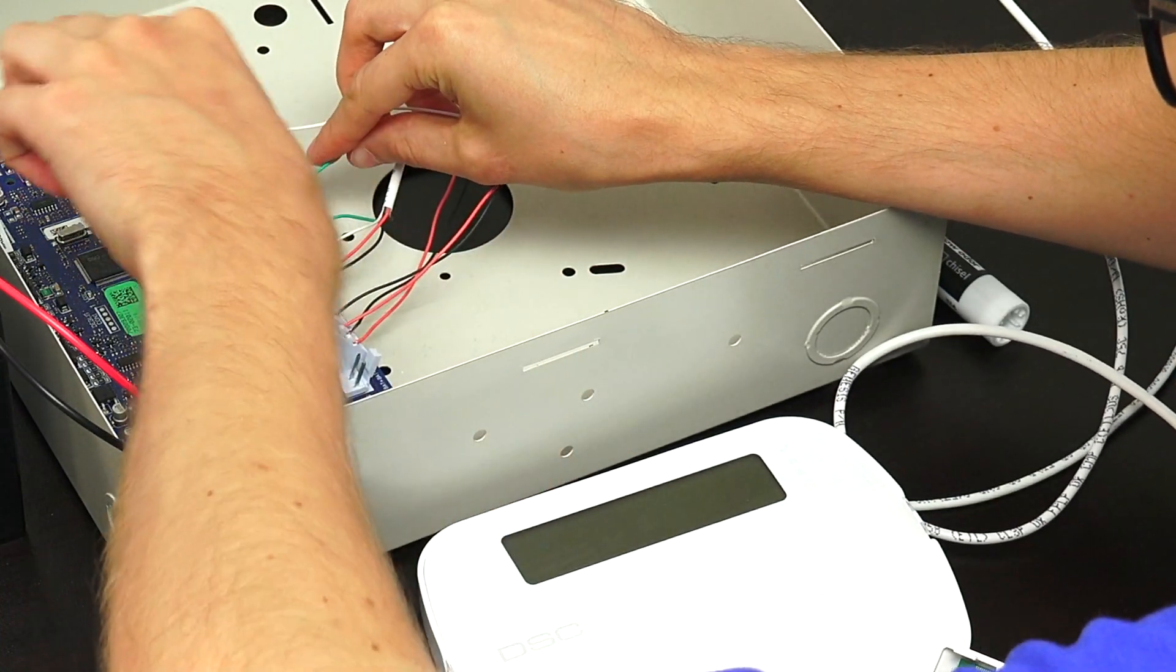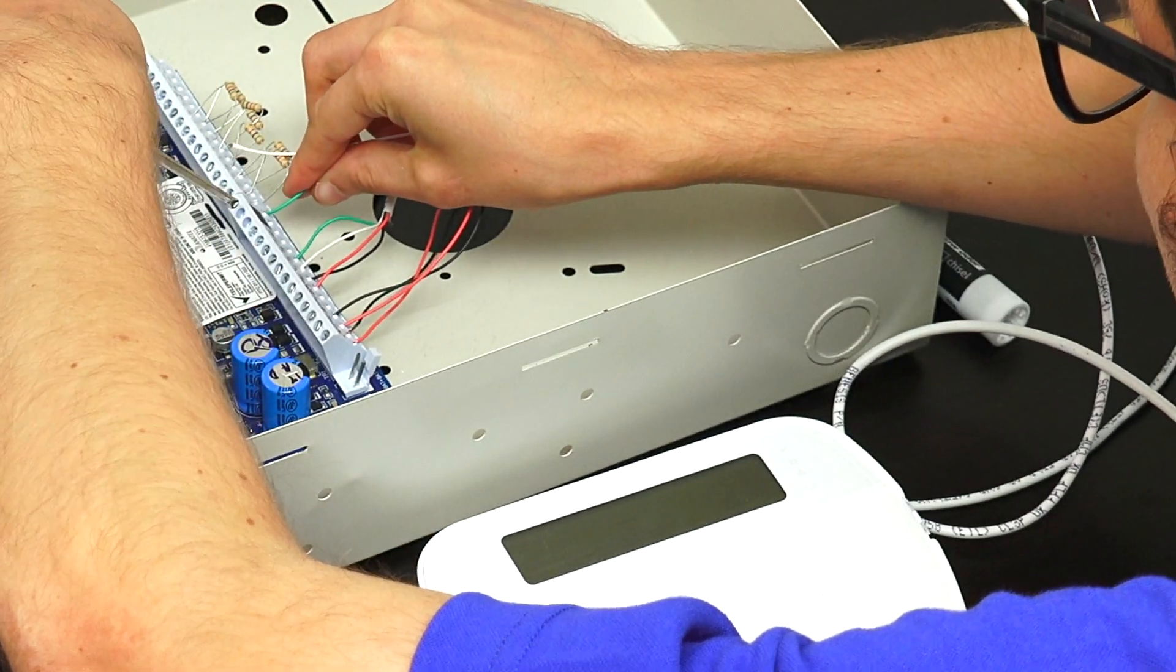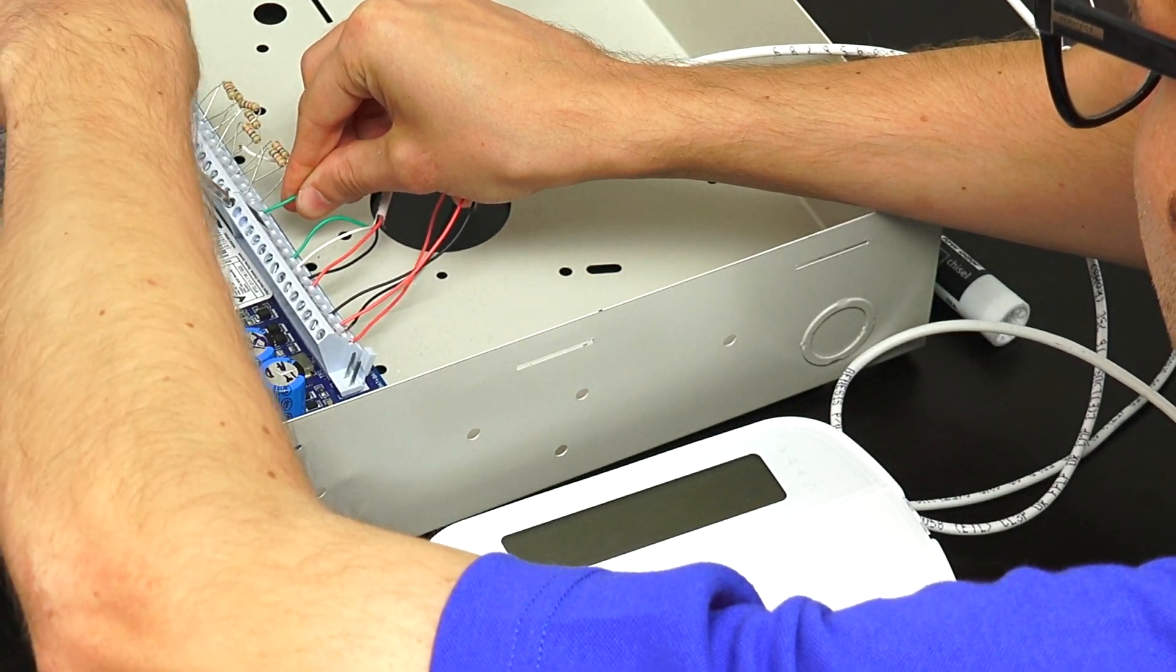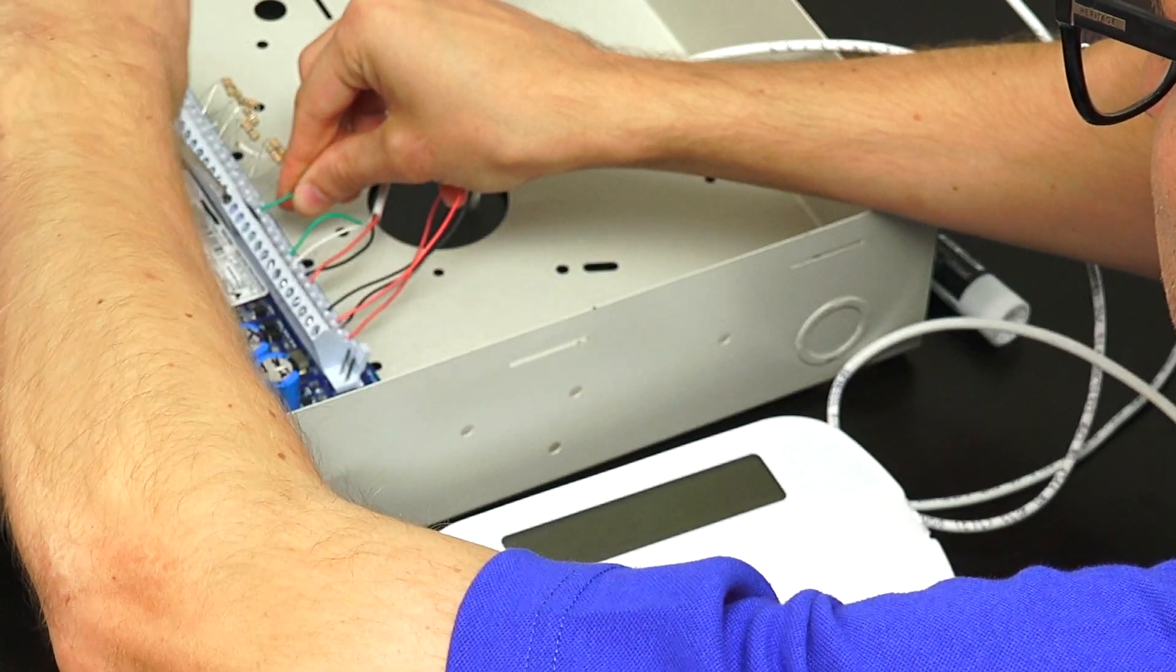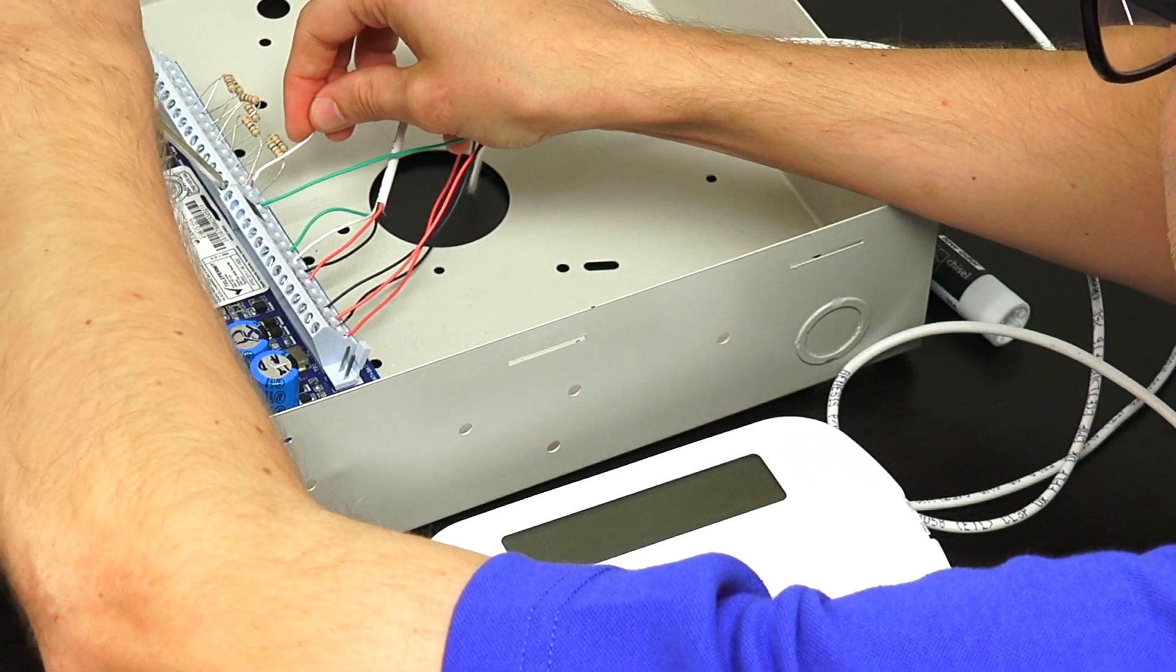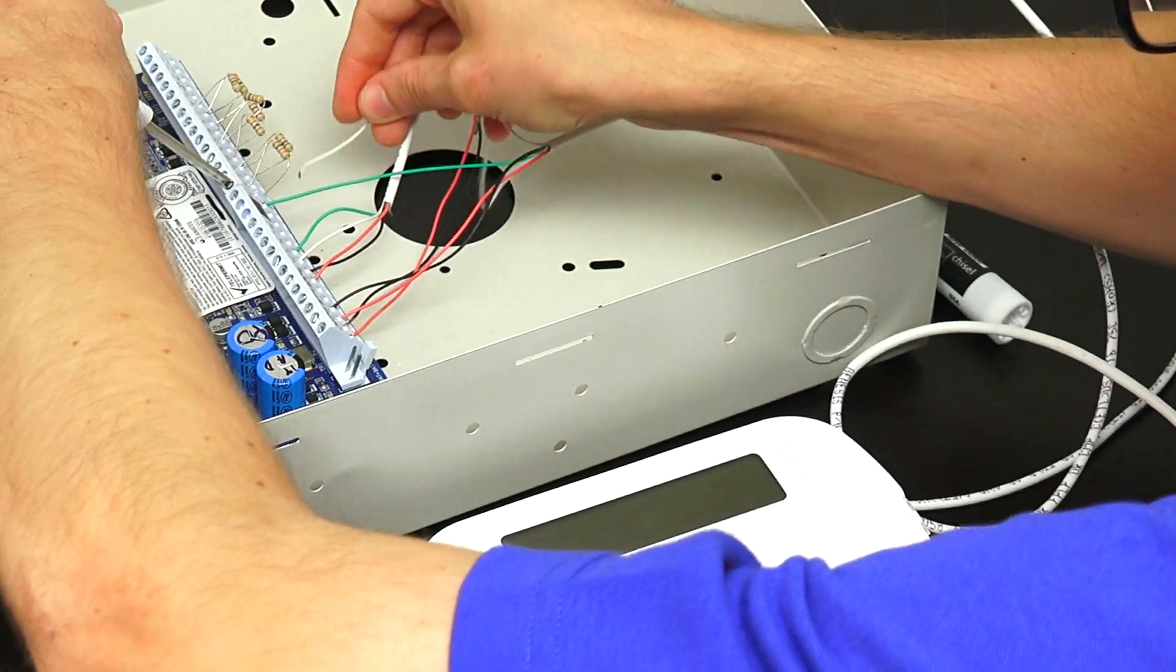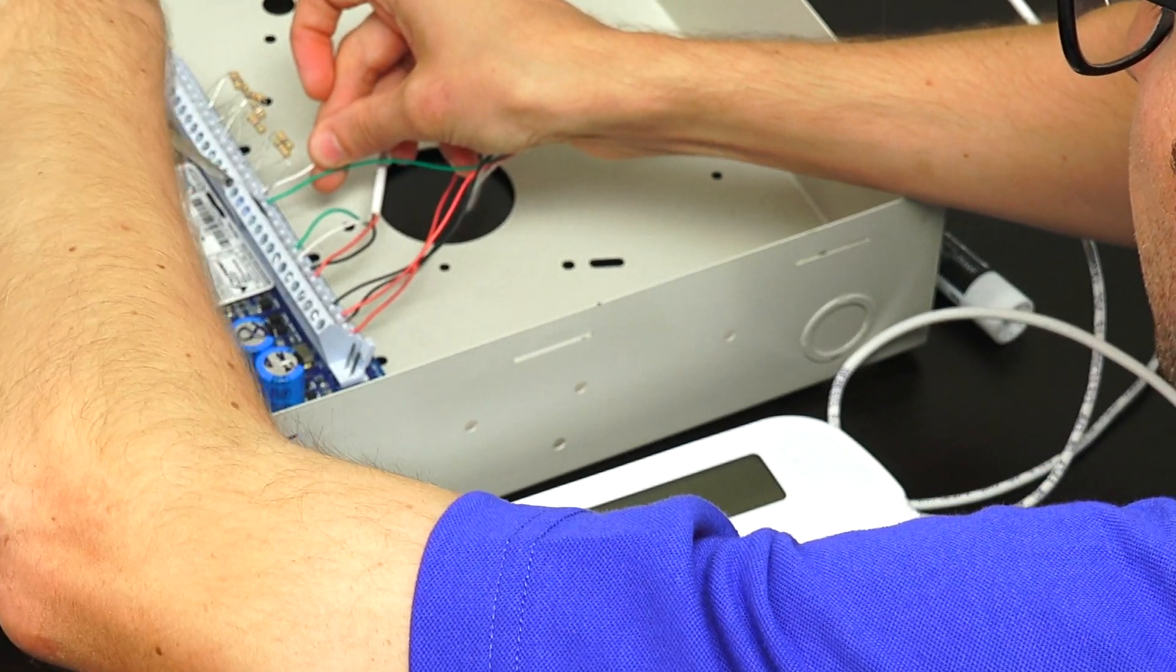We're going to connect the first one here. We're doing zone 1, and we're doing its common terminal. And we've got the first data connection here. And we've inserted it, tightened it down. And then we have the common connection here, the other zone data connection. Just insert it into the slot and tighten it down.